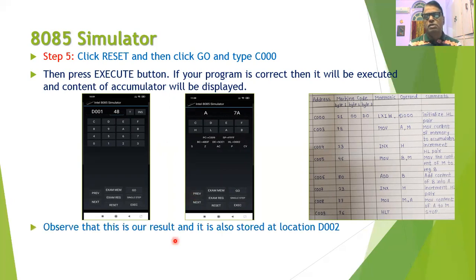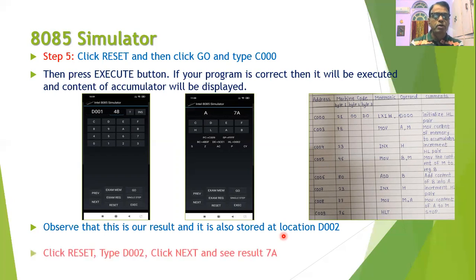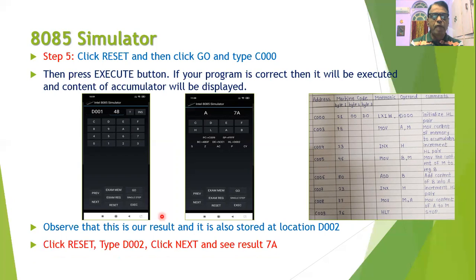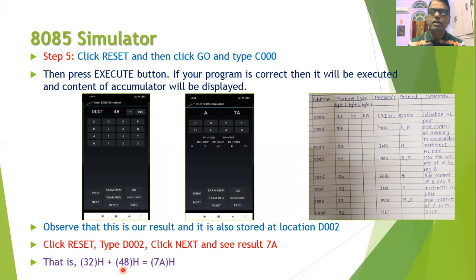The result is displayed on the screen, and in the program we also made a provision that the result is stored at location D002. Therefore, we can check whether our result is there at D002. To check, press Reset again, type the address D002, and click Next. You will observe that at that location, you will see the result 7A. This confirms that when you add hexadecimal numbers 32 and 48, the result is 7A, stored at location D002.